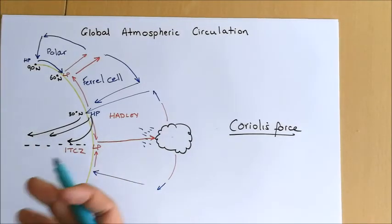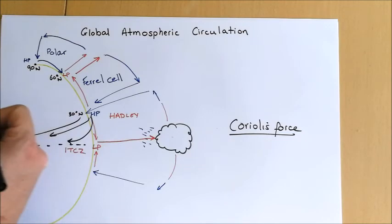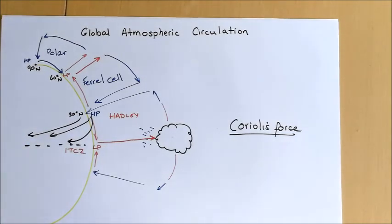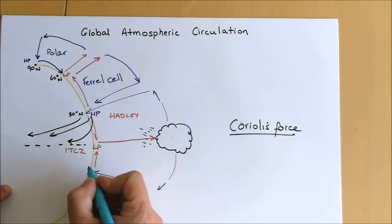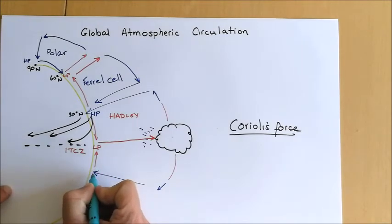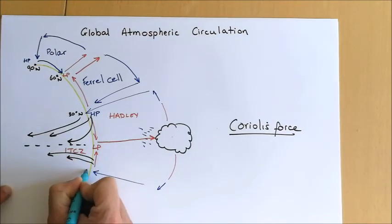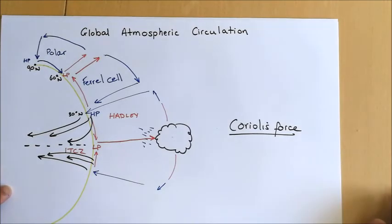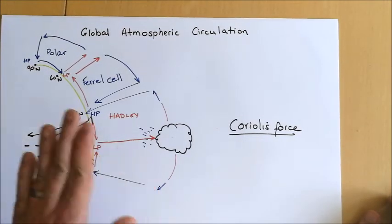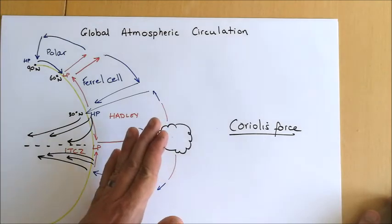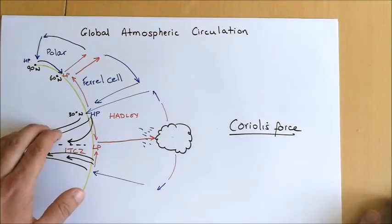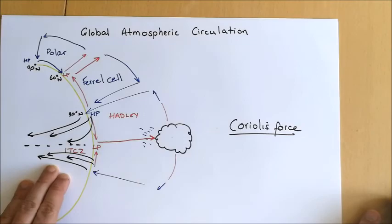That's why our hurricanes in the northern hemisphere track from east to west. In the southern hemisphere, the Coriolis force works in the opposite direction, so air is deflected to the left. Subsequently, air moving from the area of high pressure around 30 degrees south back towards the equator is deflected to the left, meaning that hurricanes in the southern hemisphere will also track generally from east to west. In the way that the northern winds are known as the north-easterly trade winds, these are known as the south-easterly trade winds.